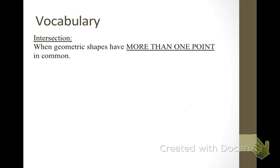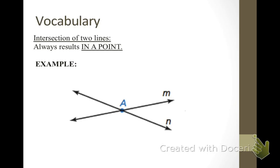An intersection is when geometric shapes have more than one point in common. Let's look at a couple of different kinds of intersections. First, let's look at the intersection of two lines. When two lines intersect, and you saw this from systems of equations, you always get a point. In this example, point A is our intersection.